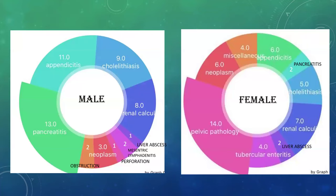Observations: Of the 50 male patients studied, most were diagnosed with pancreatitis — around 13. 11 were diagnosed with appendicitis, 8 patients had renal calculus, 9 had cholelithiasis, 3 had neoplasm, 2 were diagnosed with obstruction, 2 with mesenteric lymphadenitis, 1 had liver abscess and 1 was diagnosed with perforation. Of the 50 female patients, the most common cause was pelvic pathology seen in 14. 6 had appendicitis, 6 had neoplasm, 7 had renal calculi, 4 had tubercular enteritis, 5 had cholelithiasis, 2 had pancreatitis, 2 had liver abscess, and 4 had miscellaneous diagnoses.